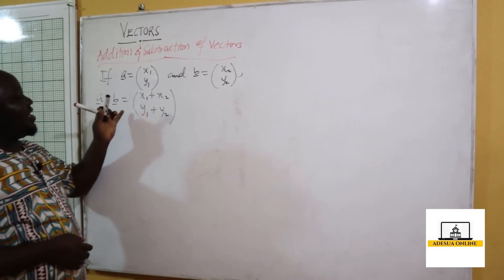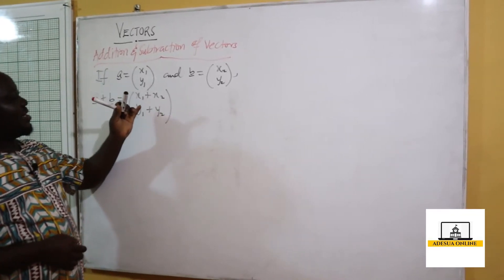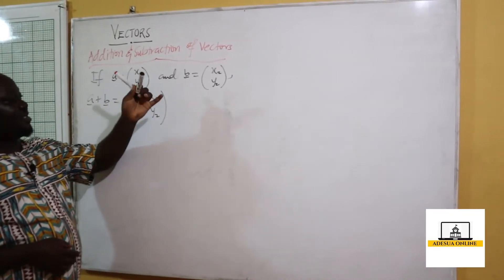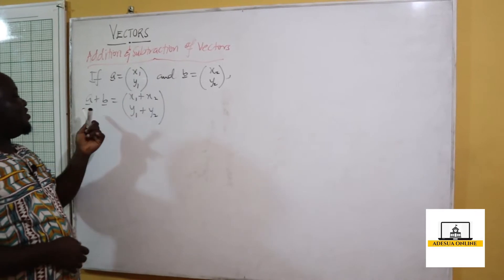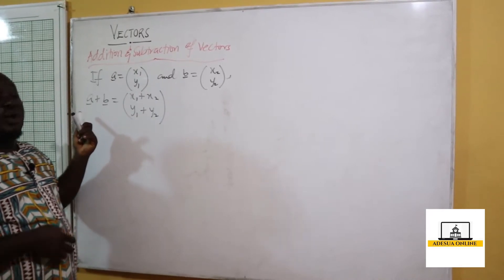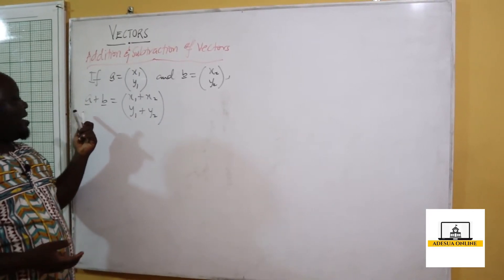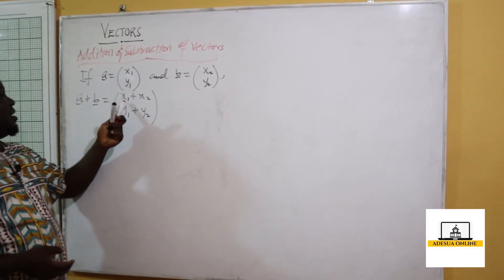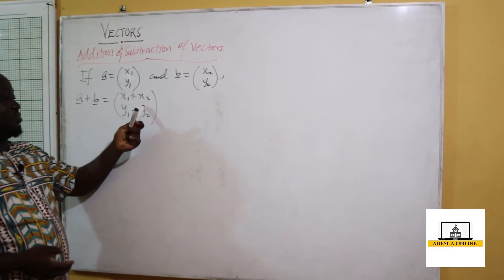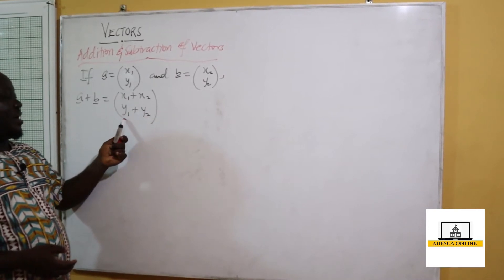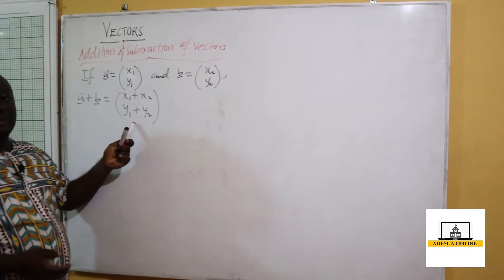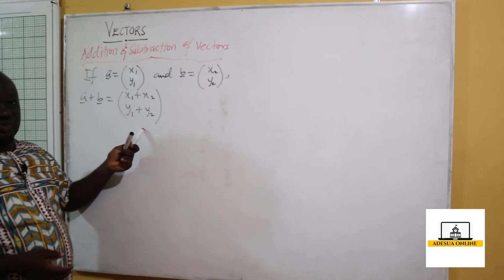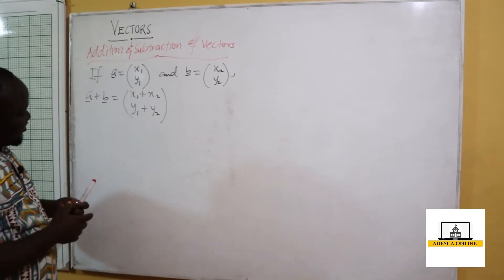If a is (x1, y1) and b is (x2, y2), and you are asked to evaluate a minus b, it becomes (x1 minus x2, y1 minus y2).